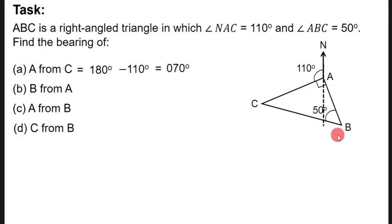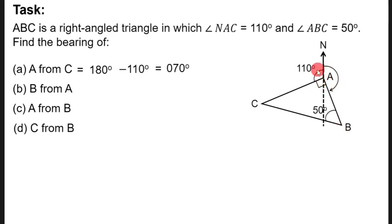For the bearing of B from A, you are at point A going to B. You draw a north line at A and measure clockwise from north to the line where B is. To find this angle, we need to know the surrounding angles. We already know the angle NSC is 110 degrees and the right angle is 90 degrees.